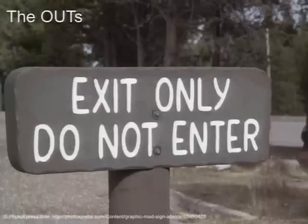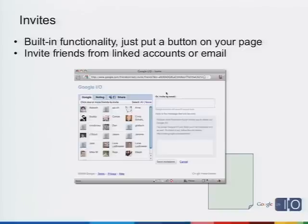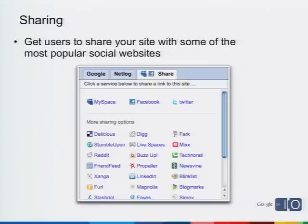The final part of the presentation is the outs — how do we get data out of our site? The goal here is to let users share their experiences on your site with the rest of the web. There are two major areas: invites and activity streams. Invites is actually part of the built-in Friend Connect UI — you basically just render one single link, and a pop-up lets a currently logged-in user invite their friends to join the site. There's also a sharing tab that lets you share the site data with popular social websites like MySpace, Twitter, Delicious, and Digg. Friend Connect gives you a really simple way to post data back out to all of these sites — in fact, it's one line of code.